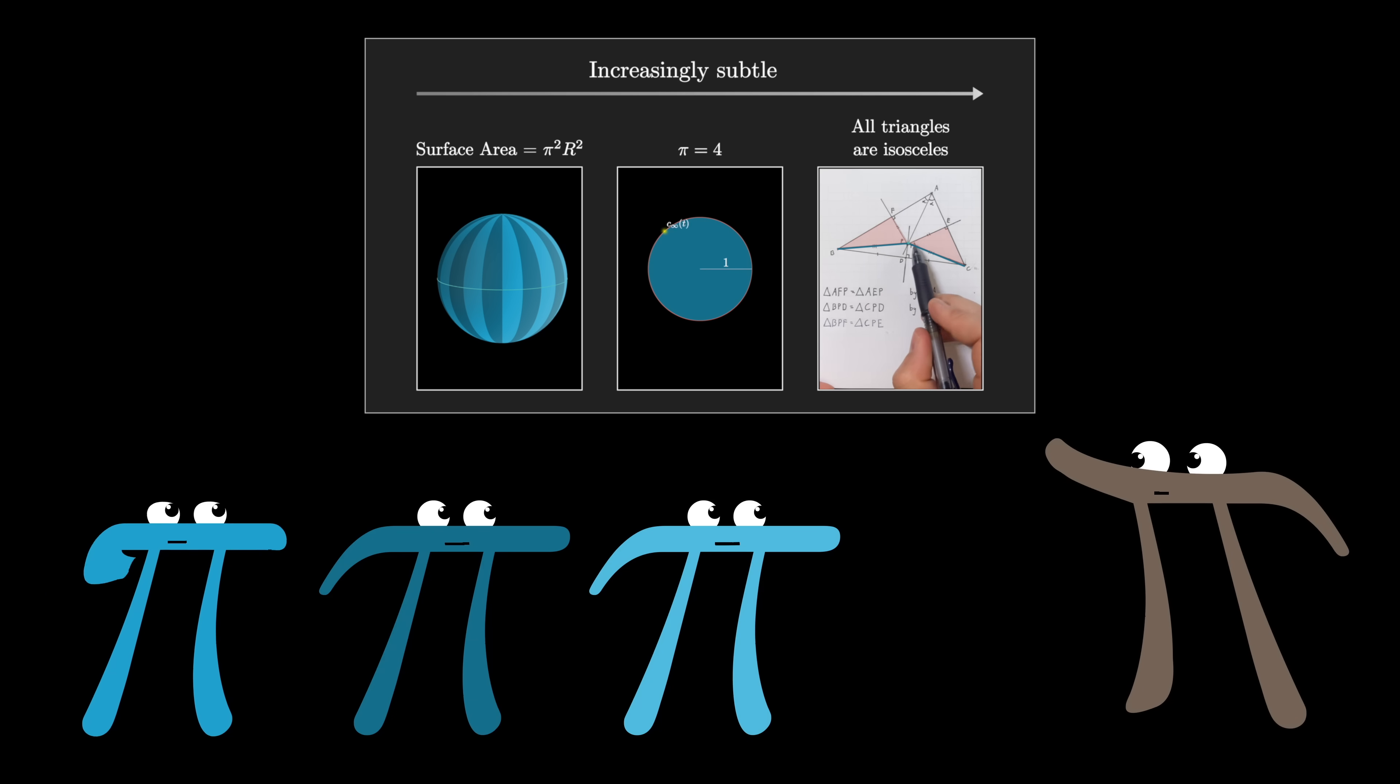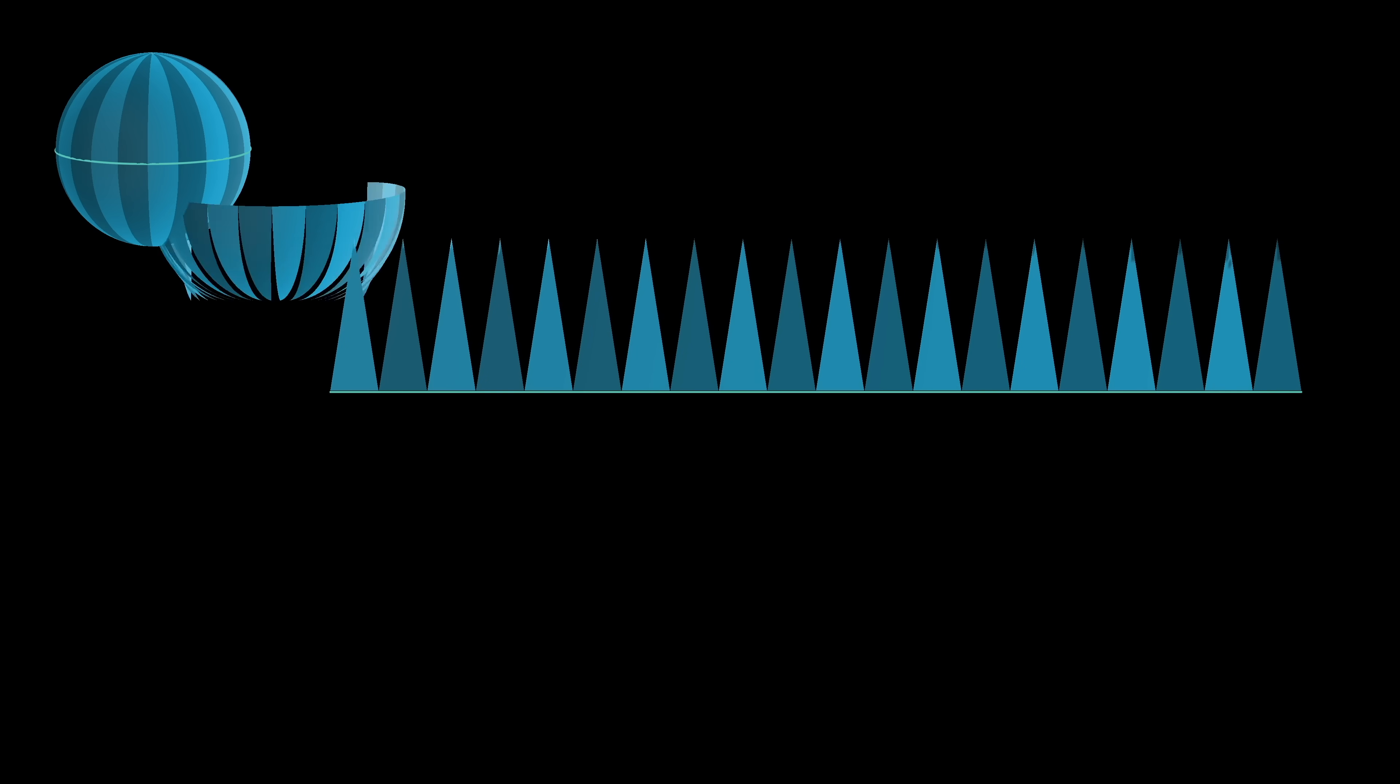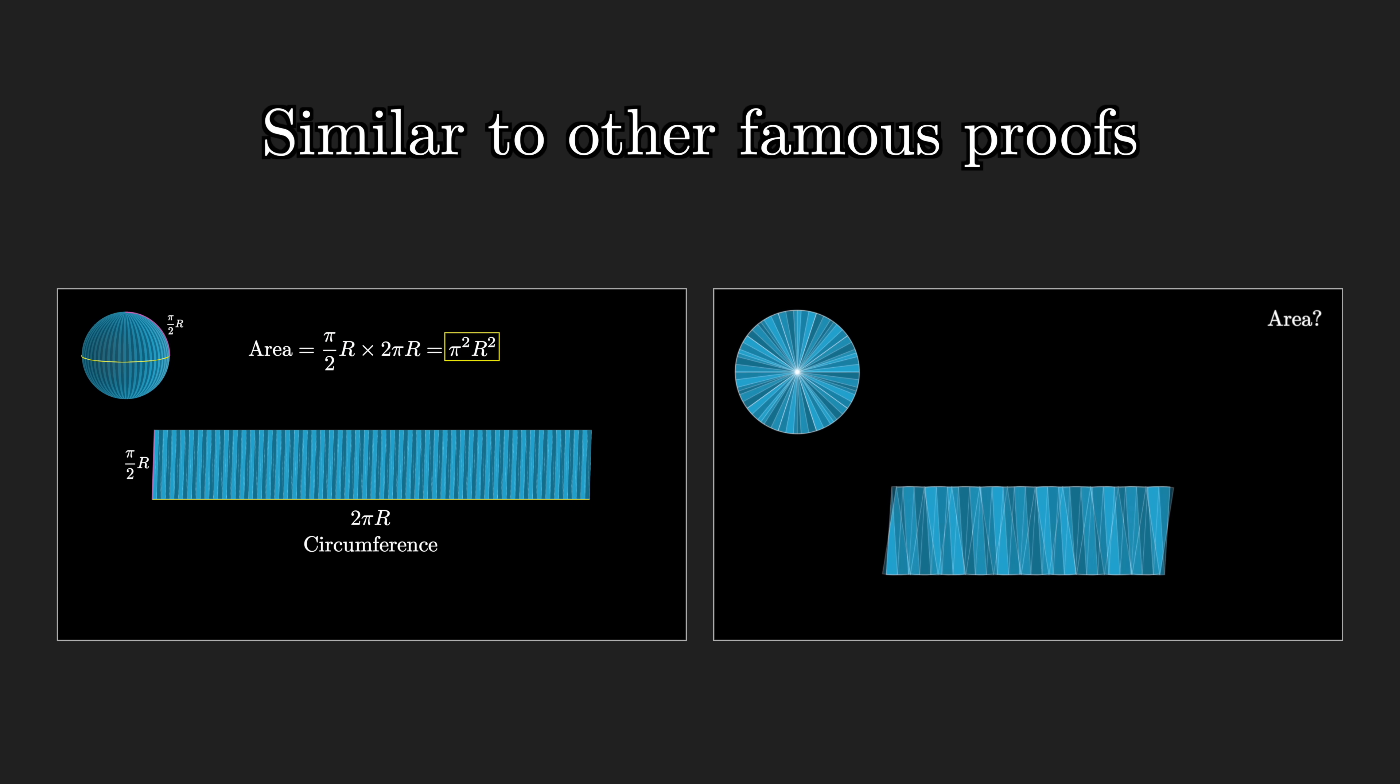So, what exactly is going on with these three examples? Now, the thing that's a little bit troubling about that first example with the sphere, is that it is very similar in spirit to a lot of other famous and supposedly true visual proofs from geometry.